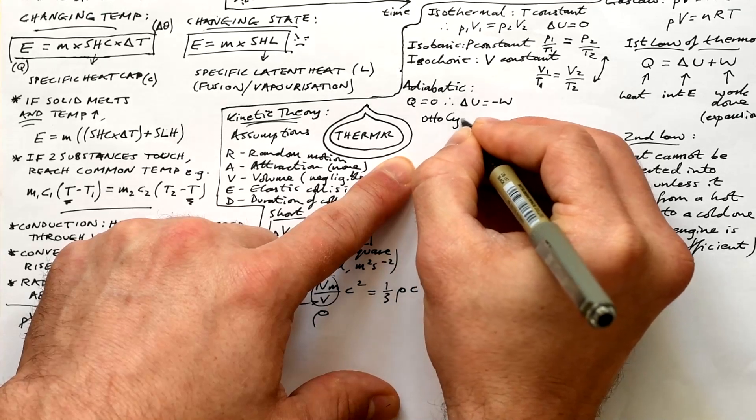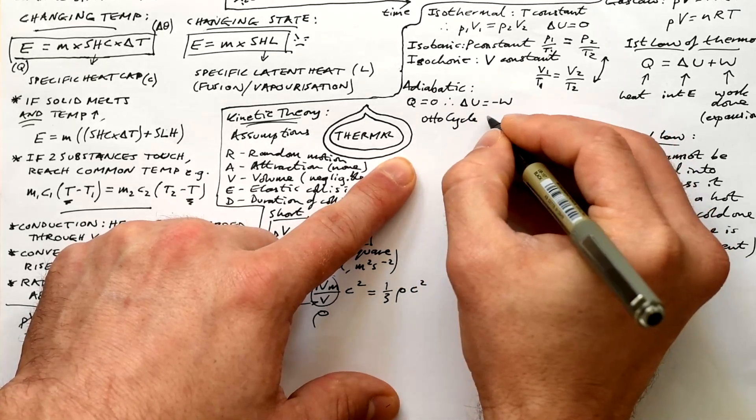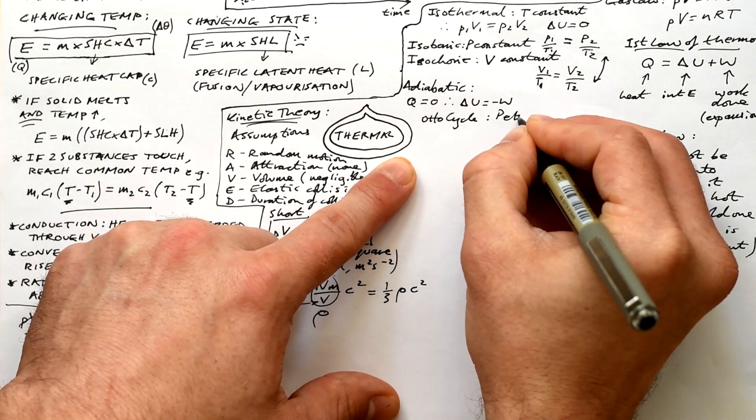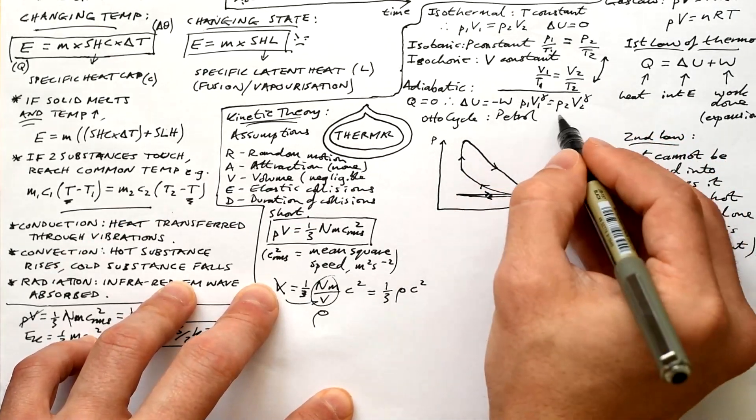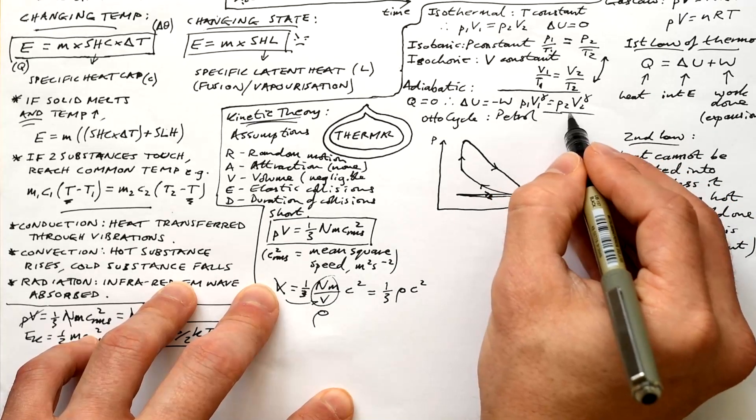Let's have a look at some engines. This applies for most A-level specifications, but for AQA, it's only if you do engineering physics optional module. Here's the Otto cycle for a petrol engine. We have four strokes. It means the cylinder goes up, down, up, down. First up, down is the exhaust and intake strokes.